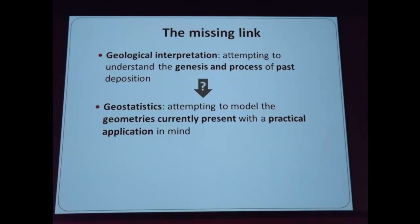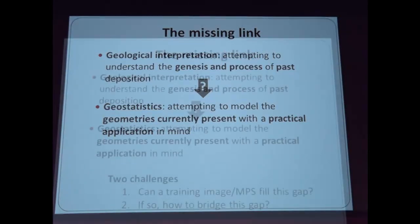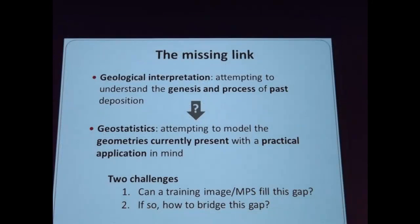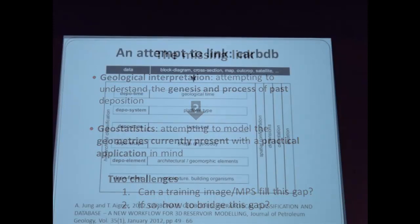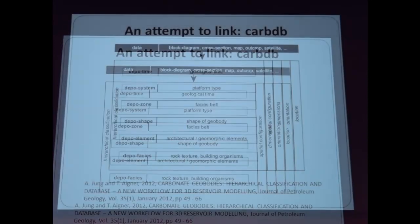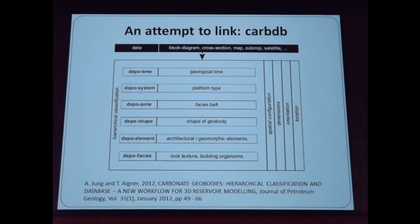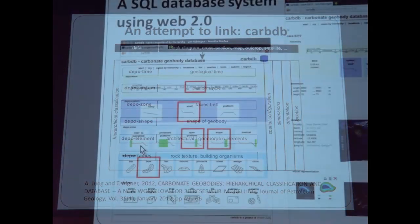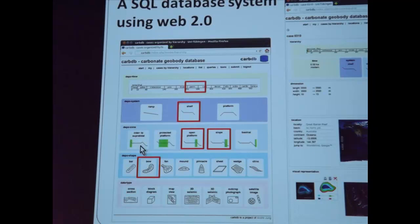How do we go from something that is an interpretation of process to something that is an interpretation of geometry? And any geostatistics for practical applications must solve real engineering problems. Can geostatistics fill this gap? Some geologists say no — they say we have to go back to the process because the process is the only thing that is real. That may be true, but it may also not be practical. One really nice attempt is a paper by Andre Jung. Andre is now a postdoc at Stanford, but was at the University of Tübingen with Thomas Aigner. He looked at about 3,000 papers of carbonate geology, classified them, and made a database that can be used for constructing training images.